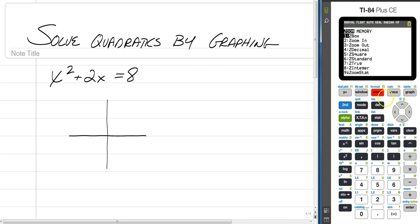And then of course you probably want to press zoom 6 to make sure that you have a standard window, and you see that you have two graphs. So you have the blue quadratic, and you have the red constant of y equals 8.